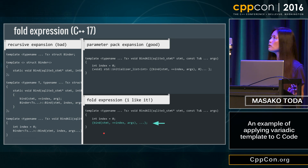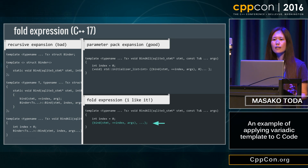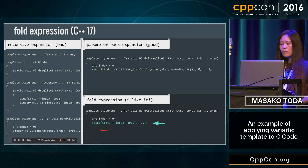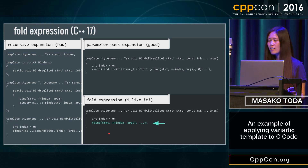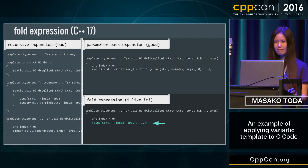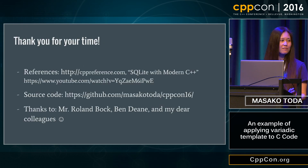With fold expressions in C++17, it gets even better — we can just write this. There is no byproduct or anything extra, and it's really clear. So I really like it. That's it, thank you very much.